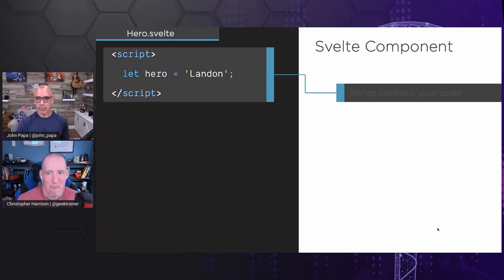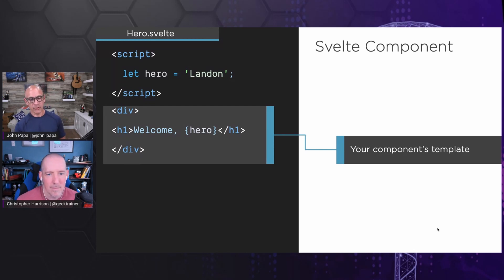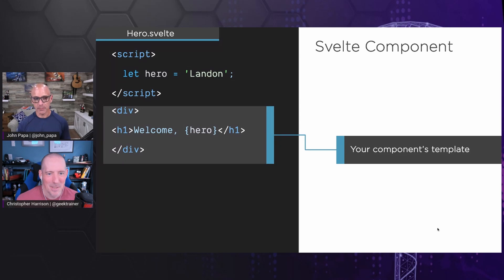The script is our code. We have JavaScript, HTML, and CSS making up the web. Next we've got our HTML — what are we going to display? Everything in here looks very normal except for the hero with the curly braces around it. The hero is the variable from the code. People call this interpolation, variable switching, or the reactivity of Svelte. When Svelte sees that the word hero is changed to Landon, it finds every place in the HTML where hero is referenced in those curly brackets and replaces it. That's the reactivity, and there's nothing you have to do to make that work — it just does.